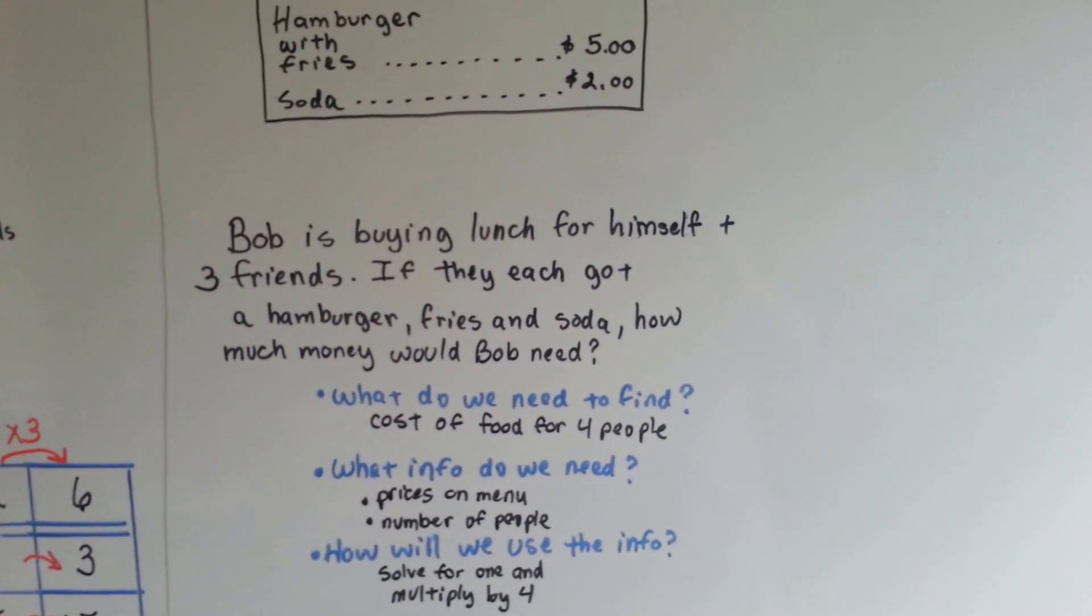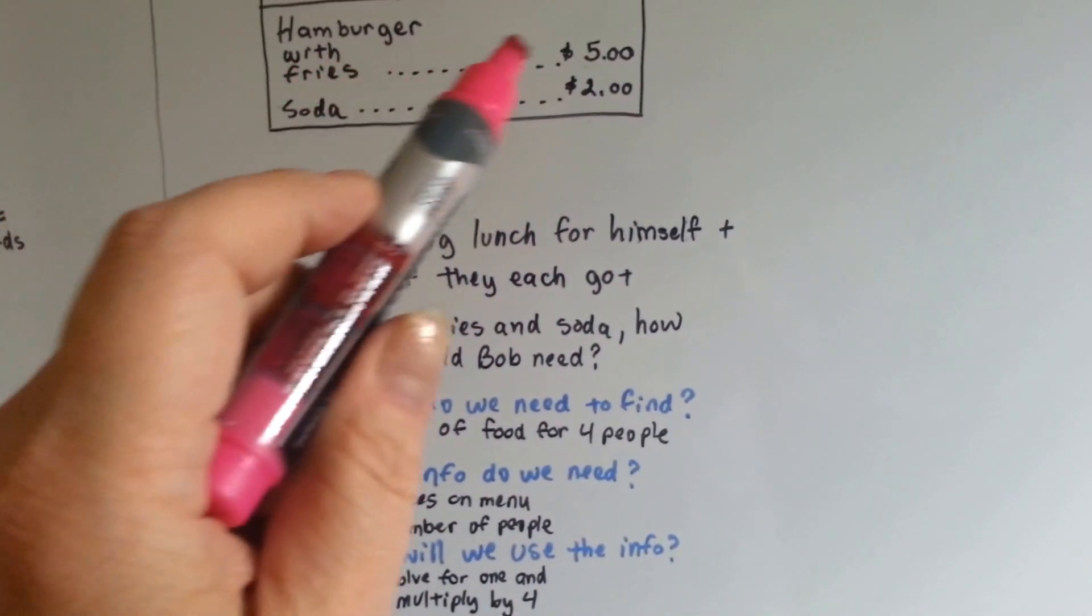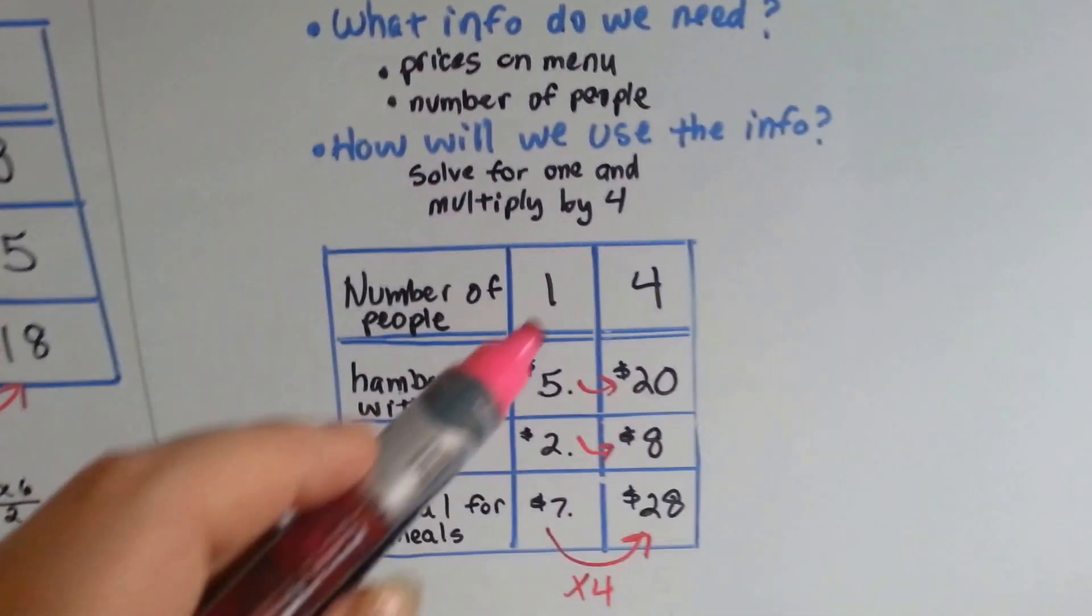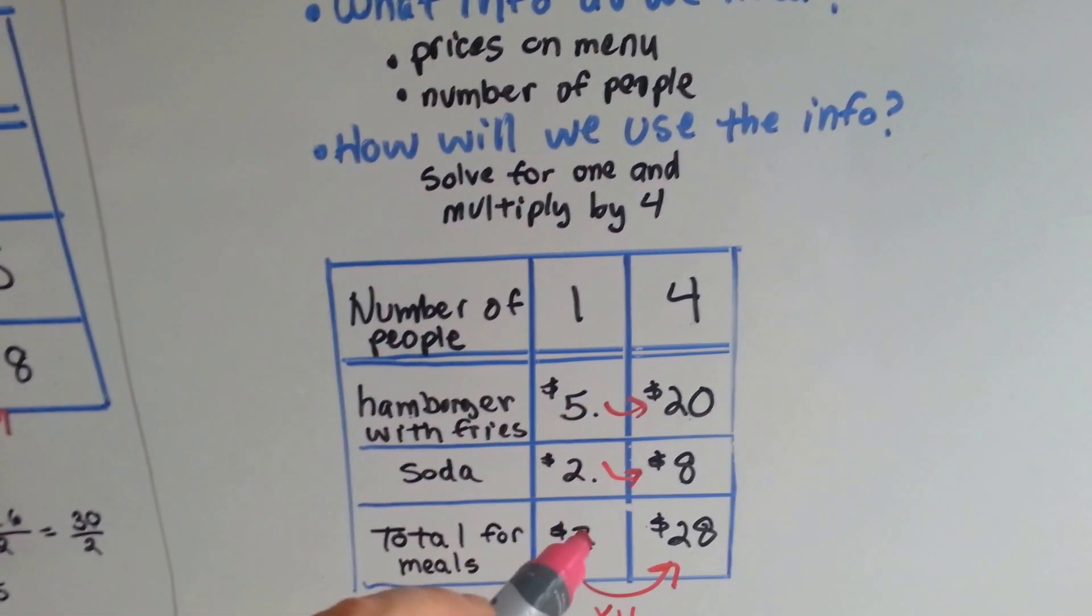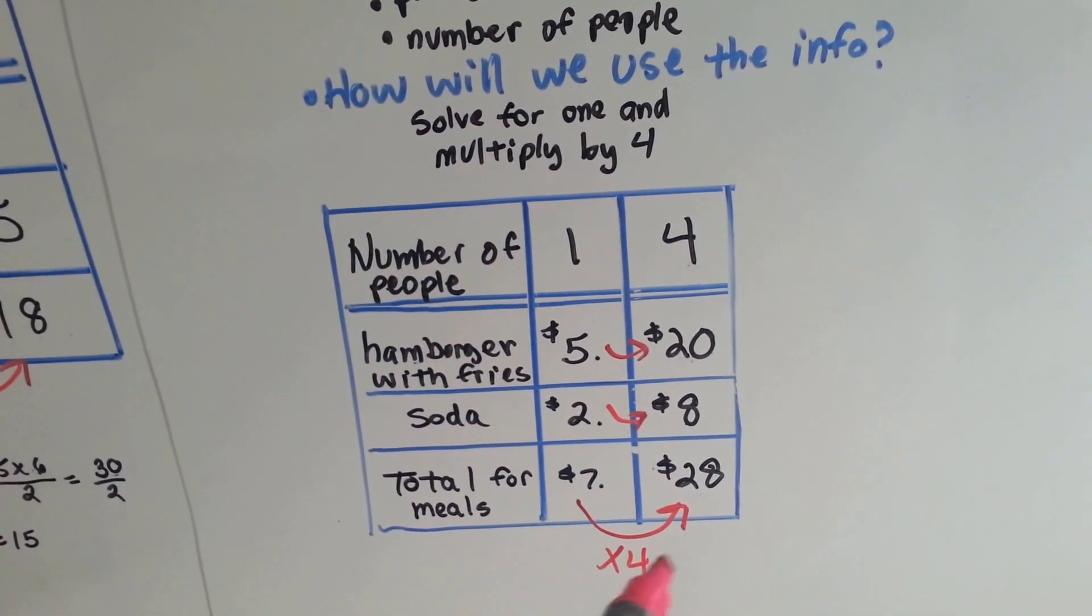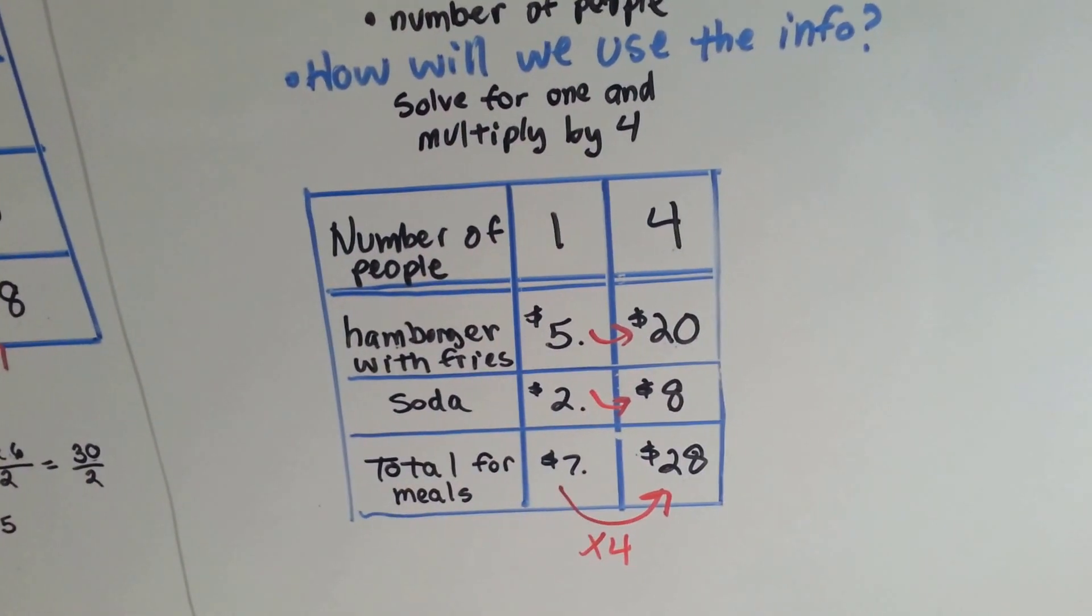And then we'll multiply it by four. So one order of hamburger and fries is five dollars and the soda is two. So that means a meal for one person is seven dollars. If there's four people, we just multiply the seven times four and we get twenty-eight dollars.